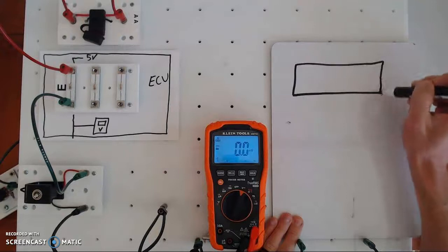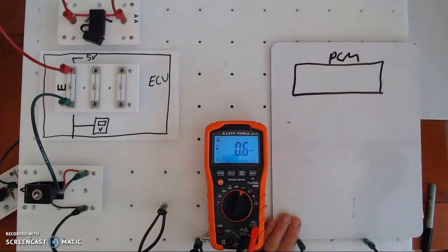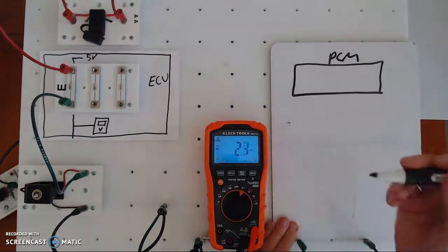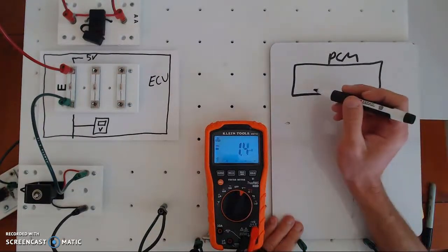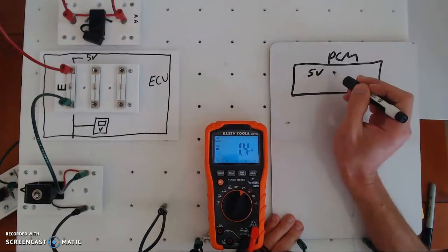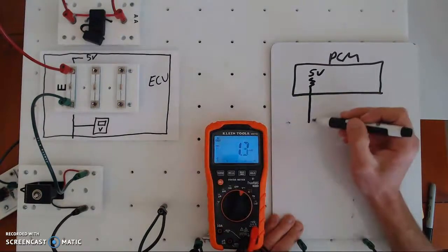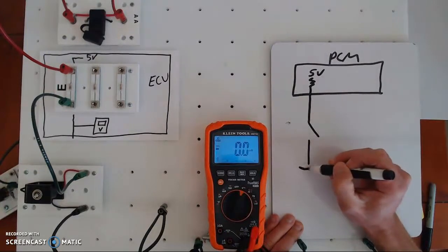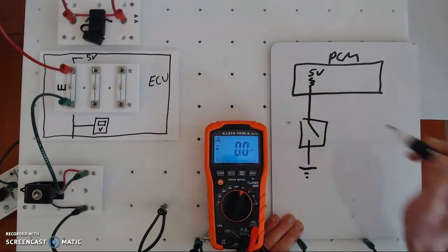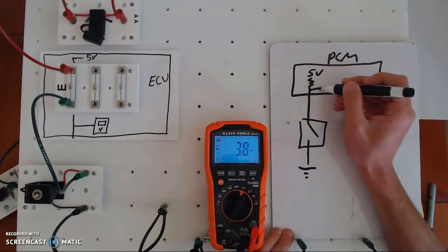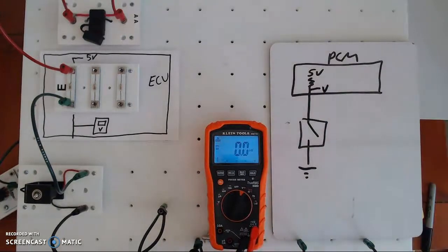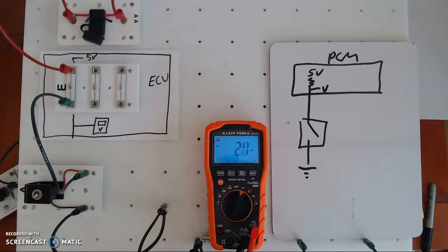I have a computer here — my PCM/ECU — and this works for any type of control unit. This two-wire circuit I'm going to show has what you don't see in a schematic: a 5-volt reference, a fixed resistor, and it comes out into a switch, which I'll elaborate on later. Inside the PCM there is a voltmeter that measures that voltage.